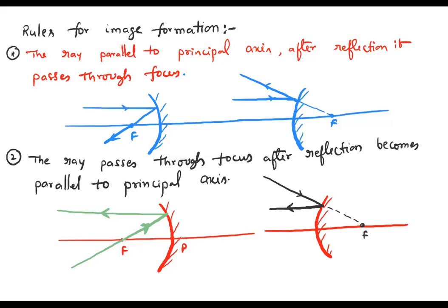The first rule is the ray parallel to the principal axis. After reflection, it passes through focus. In case of a convex mirror, after reflection it appears to pass through focus.